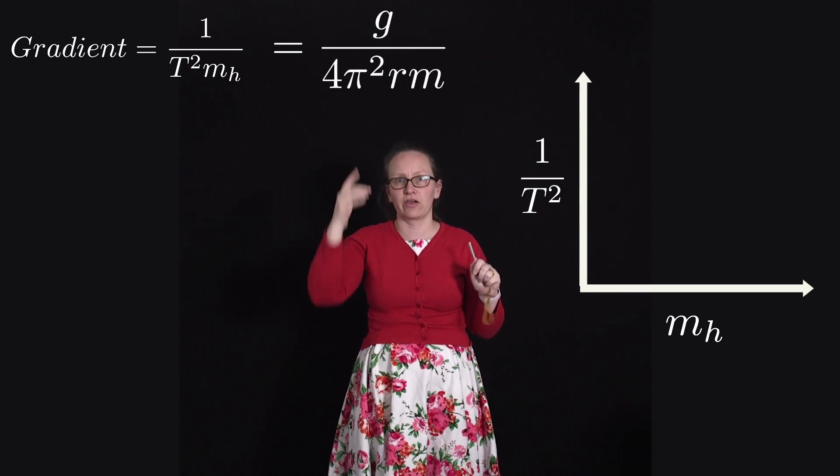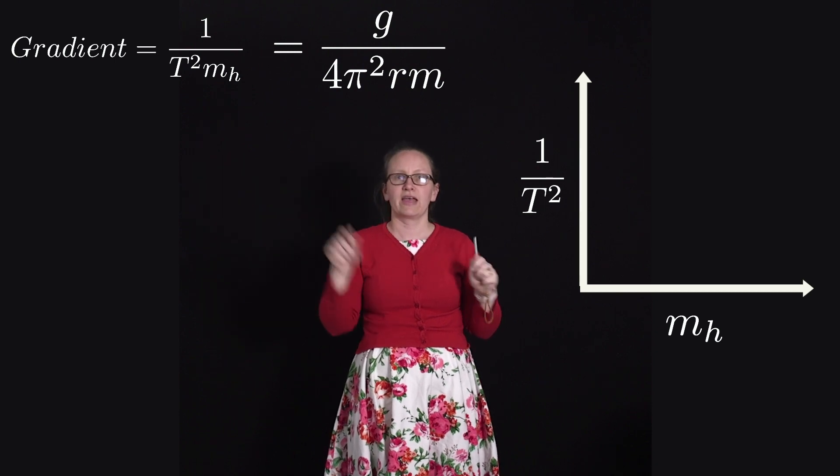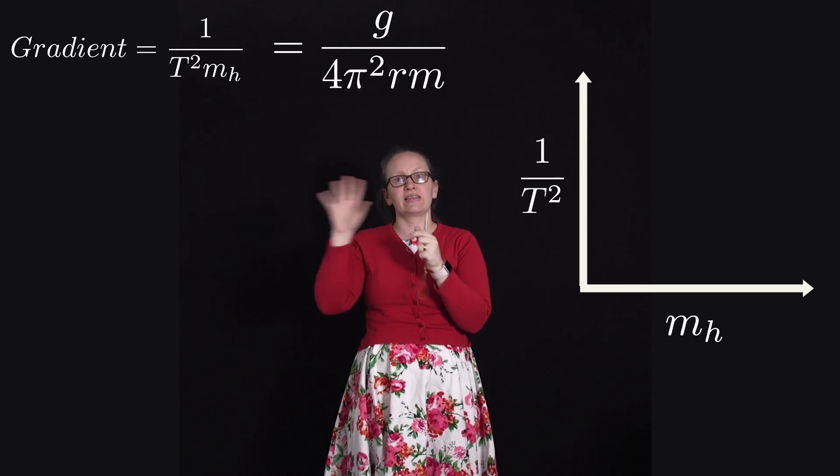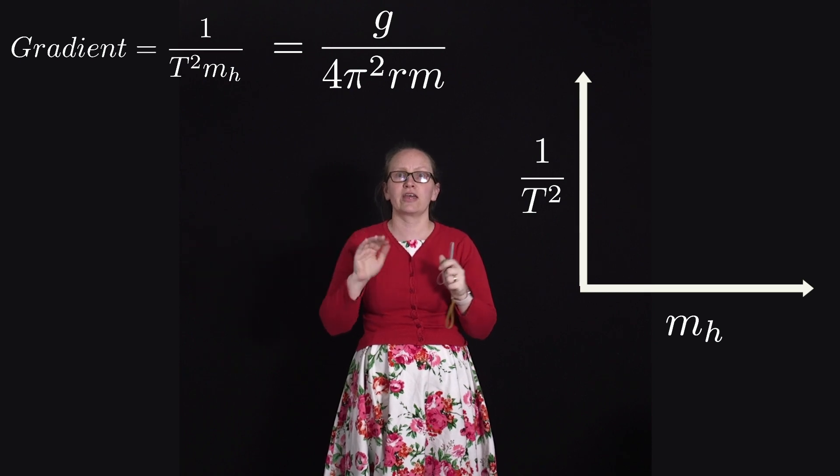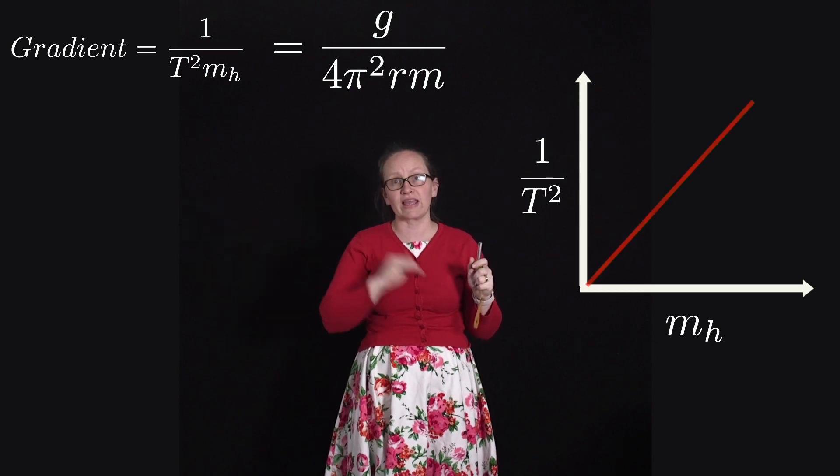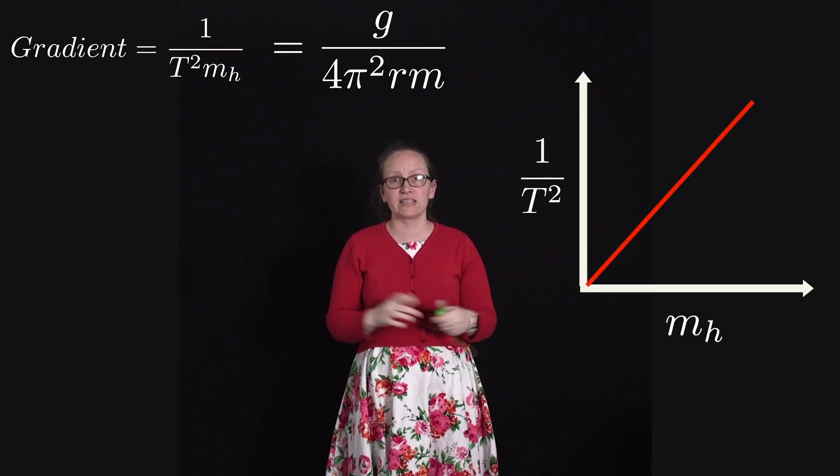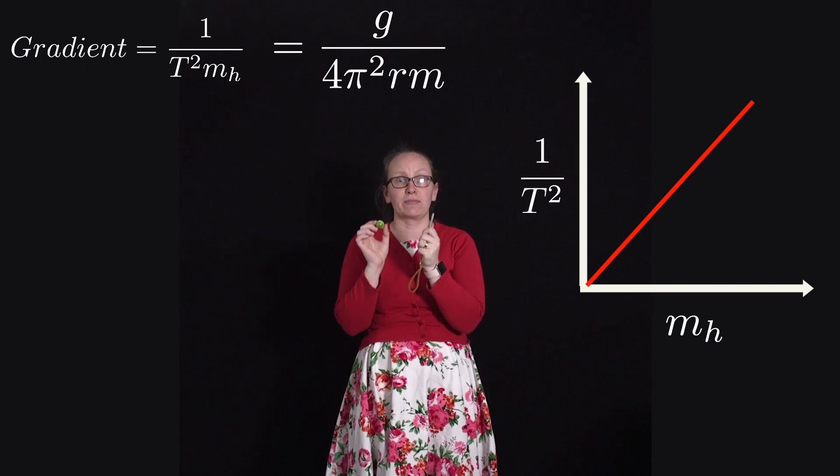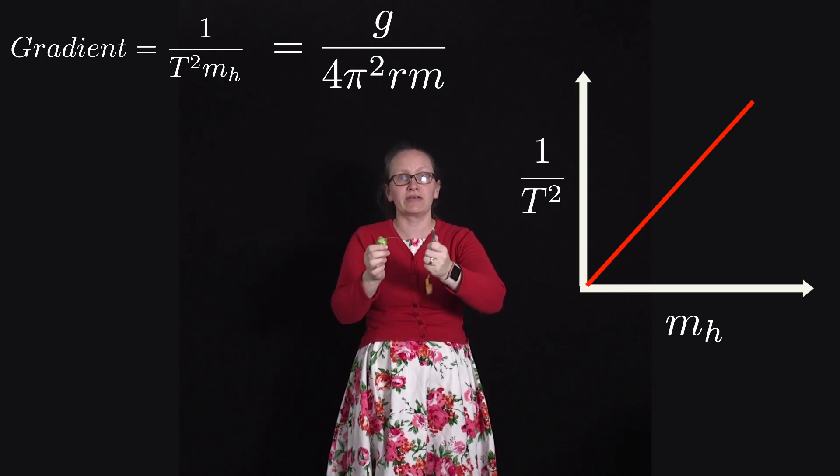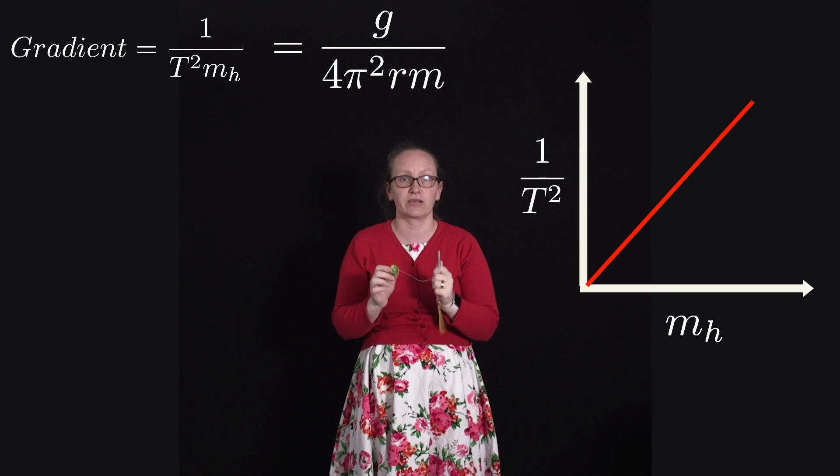Where r is the radius of the orbit, m is the mass which is being swung, and none of that stuff's changing. So they should end up with a nice straight line graph if they do this, and it gives them a bit of an opportunity to experience the circular motion equations.